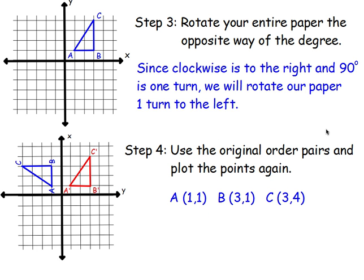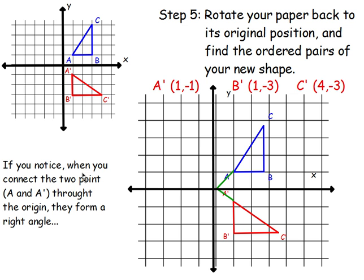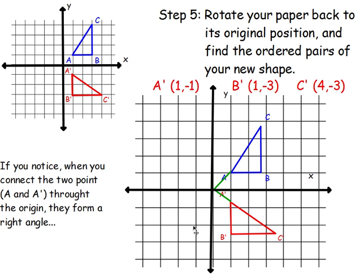Since this was clockwise — to the right — we turned our paper to the left. And since it was 90 degrees, that means just one turn. So then we just replotted our points. Step five is you're going to rotate your paper back to its original position and find the ordered pairs. So now A' is at (1, -1), B' is at (1, -3), and C' is at (4, -3). If you connect A to A' through the origin, they form a 90 degree angle, which is what we wanted to rotate by. Same thing with B and C.